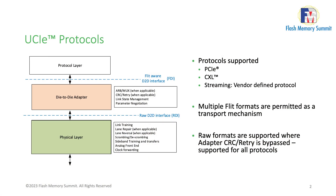In terms of the UCIE stack, I want everyone to focus on the fact that it's a very layered stack approach. There is a physical layer module which takes care of things like link training, lane repair, lane reversal, scrambling, de-scrambling, sideband training and transfers. It has the analog front end as well as a forwarded clock architecture. Its interface to a die-to-die adapter is through an interface called the raw die-to-die interface, which is also defined in the UCIE stack.